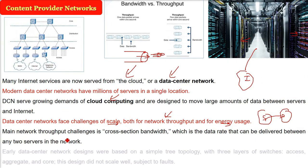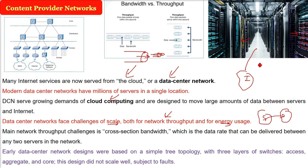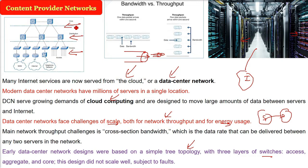Every data center previously was based on a very simple tree topology, which we'll talk about in detail later. For now, you can assume it to be on three levels — three layers of switches: access, distribution (or aggregate), and the third is called core. The problem with this design was you cannot scale, you cannot add more servers, and most of the time faults are there — they were subject to fault.